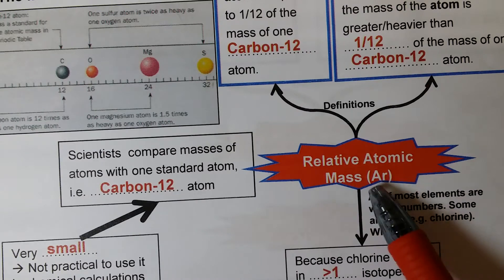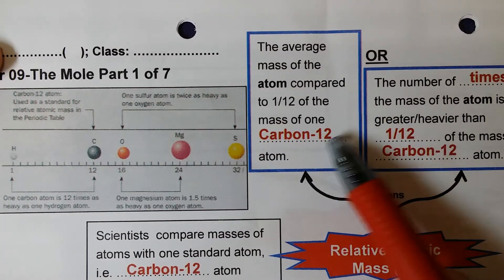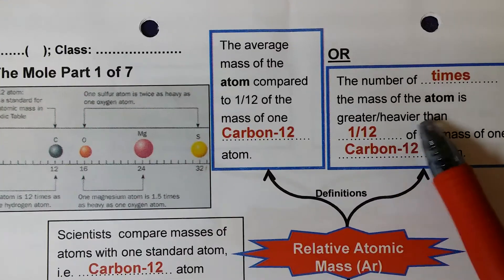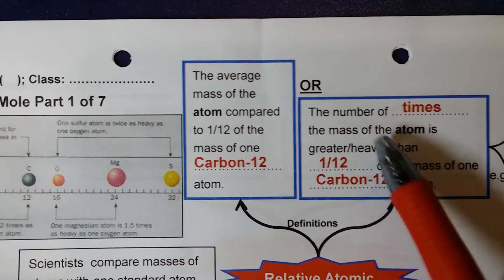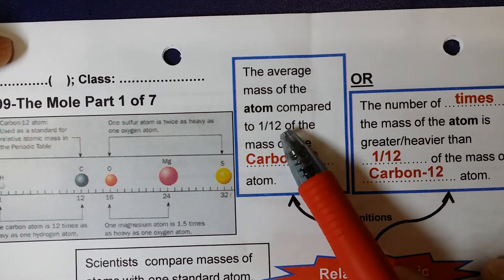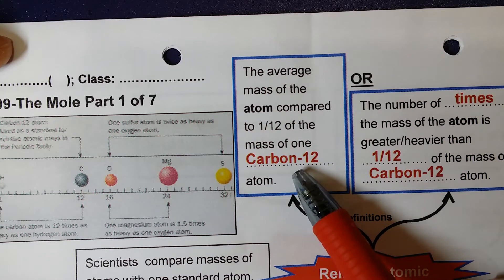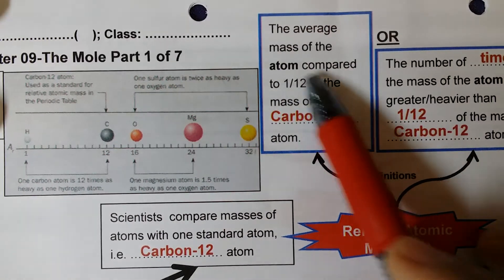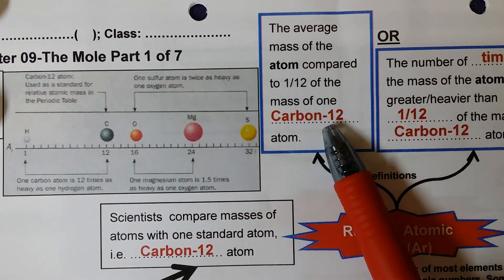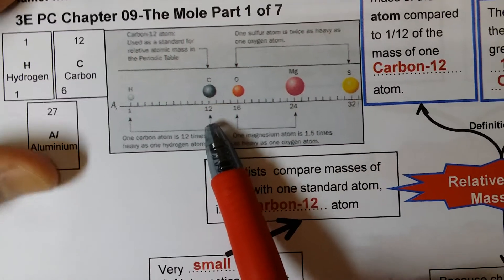Relative atomic mass, or AR. This is the definition of relative atomic mass or AR — you have to memorize it. The definition is: the average mass of the atom compared to 1 over 12 of the mass of one carbon-12 atom. Now why do we have this 1 over 12? Because the mass of a carbon-12 atom is actually 12 units.